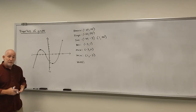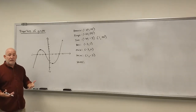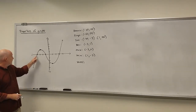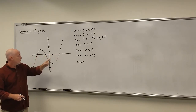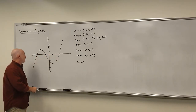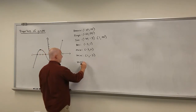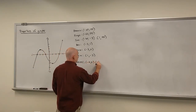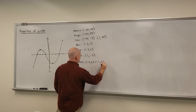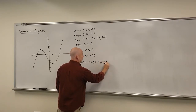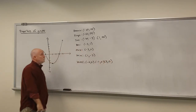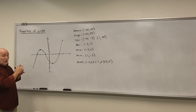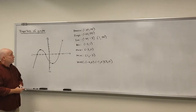For zeros — just a fancy way of saying x-intercepts — we have three: it looks like we cross the x-axis at (−4, 0), (−1, 0), and (3, 0). That gives us a whole lot of information about this picture.